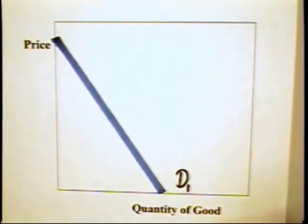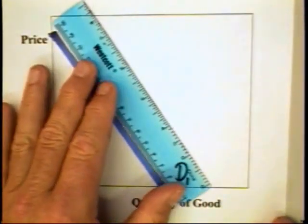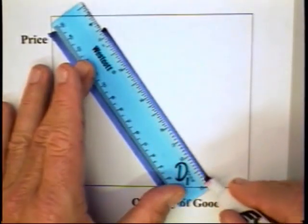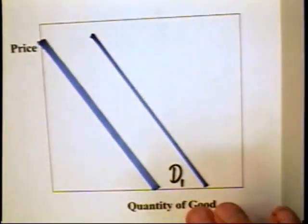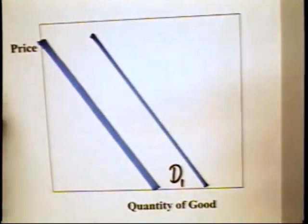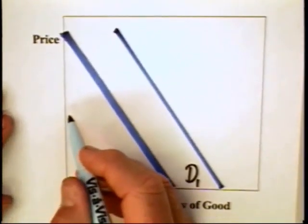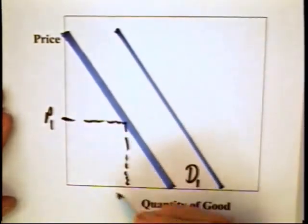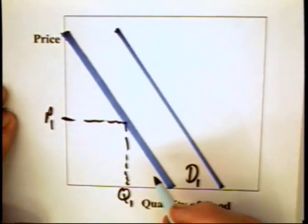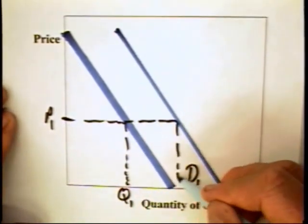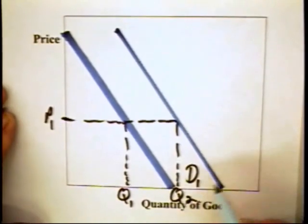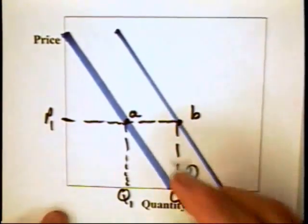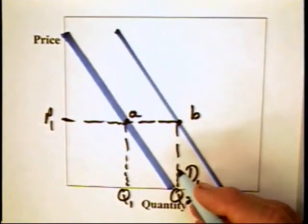Now, why would a firm want to raise its demand? Well, the obvious explanation that everybody points to is that by raising demand, a firm can sell more. At a price of P1, the quantity demand goes from Q1 with the greater demand. It goes all the way up to Q2. We move from combination A to combination B. Well, of course, the firm would like to sell more.